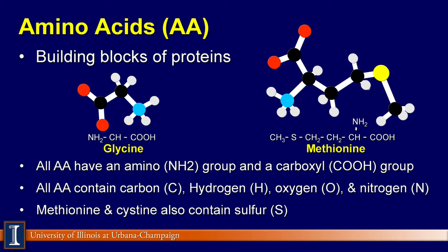Cows eat protein to obtain amino acids. Amino acids are the building blocks from which all proteins are synthesized. Therefore, cows must be fed crude protein in the diet if they are to synthesize milk protein and muscle protein.